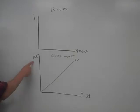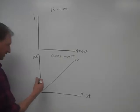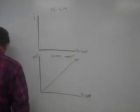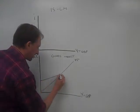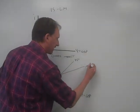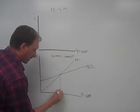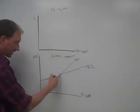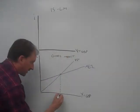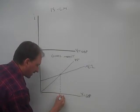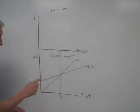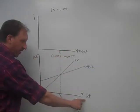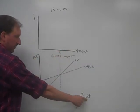We know that AE consists of C plus I plus G plus NX. Once you add all those up, you get that upward sloping aggregate expenditure curve. That might look like this and we'll call that AE1. Then wherever that crosses over the 45-degree line, that's going to be equilibrium GDP for this economy. So here this economy is going to settle in on Y1.